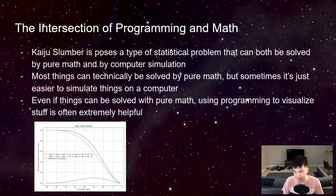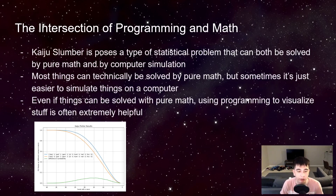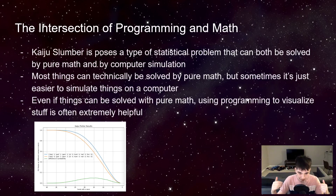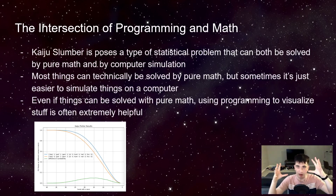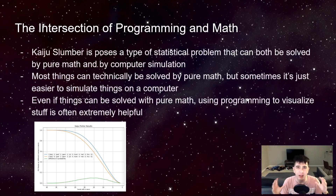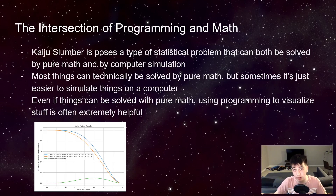A lot of times we as computer scientists or programmers simulate things because it's easier than figuring out the whole probability thing. There's sometimes going to be too many variables. But Kaiju Slumber is in that perfect middle ground — maybe you could solve it with math, maybe you could solve it with simulation. You can probably do both. In fact, I've done both in this video.